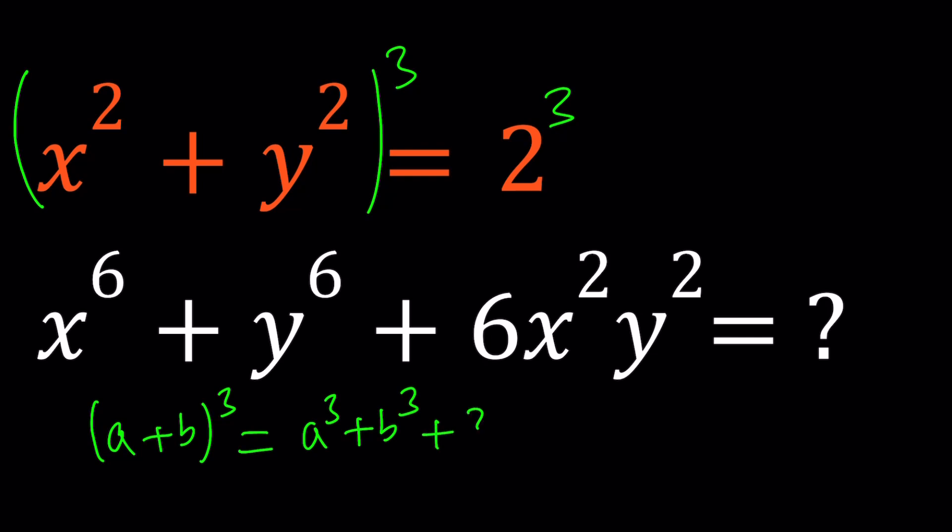a cubed plus b cubed plus 3ab times a plus b. This is helpful for using the cubic formula, and that's an identity we very often use.